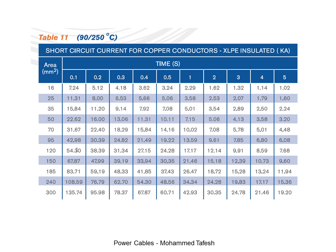If we go up for more seconds, we note that these values decrease gradually until we reach 5 seconds. And if we go up to a greater cross section area of cables, we note that the value of short circuit current increases also.